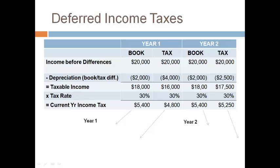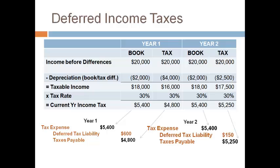For each year, two columns are used — one for books and one for tax. All revenues and expenses except depreciation expense are the same for books and tax. The income before the depreciation difference is $20,000. Subtract the depreciation expense amount for book and tax to get the taxable income for each, then multiply by the tax rate to get the tax expense and the tax payable recorded. The difference between the expense and the payable is the deferred tax liability, which equals what was computed on the previous schedule.